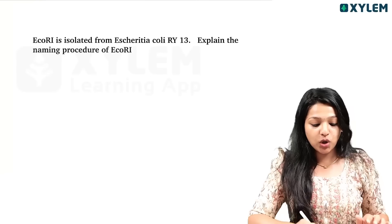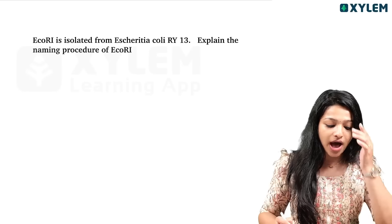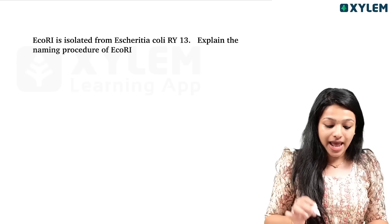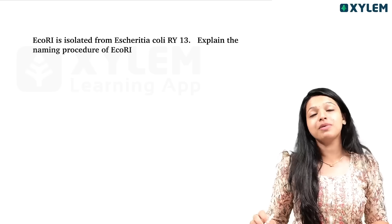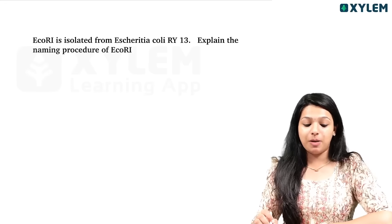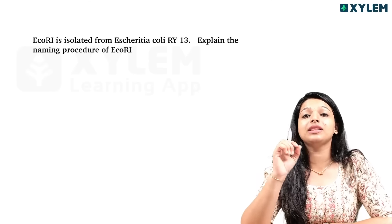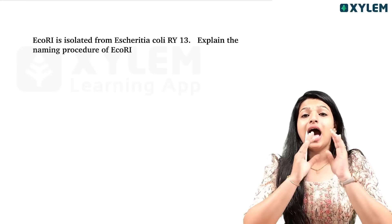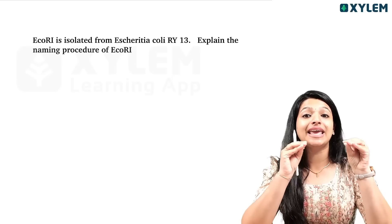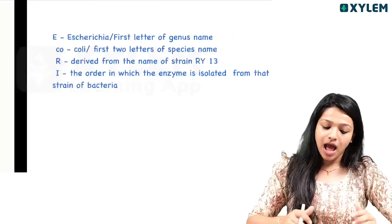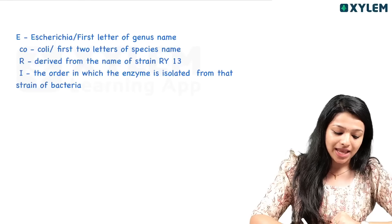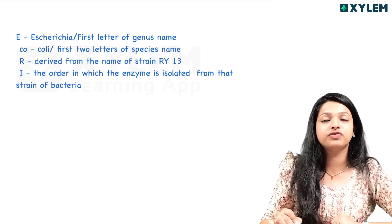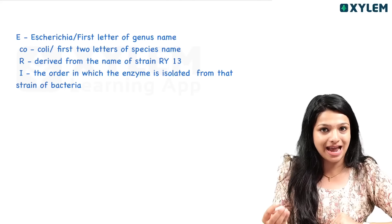First question: EcoRI is isolated from Escherichia coli RY13. Explain the naming procedure of EcoRI. EcoRI is a restriction enzyme, not a cloning vector. We are going to learn the naming of this. Escherichia coli is a bacteria.